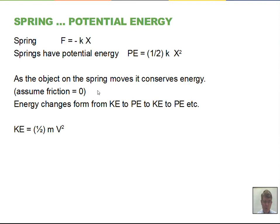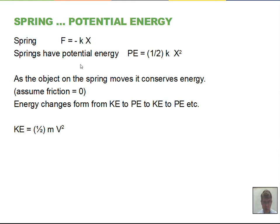As we work problems with springs, something to be careful of: is the force constant as x changes? As the spring oscillates back and forth, the force is not constant because x is changing — the distance from equilibrium changes, so the force changes. F = ma can still be applied, but the acceleration changes. Therefore you must not use the four kinematic equations, which require constant acceleration. For example, v = v₀ + at cannot be used here. We'll use energy methods — kinetic and potential energy — to solve problems involving springs.